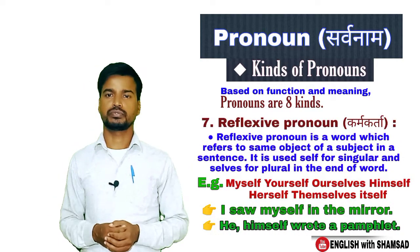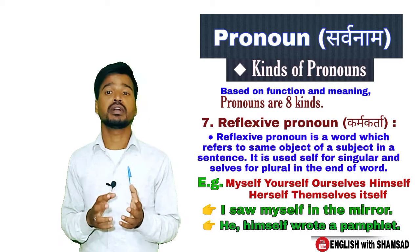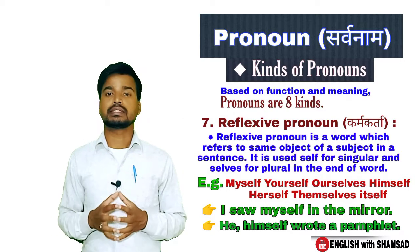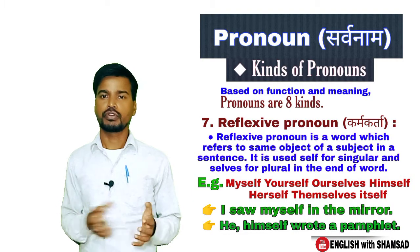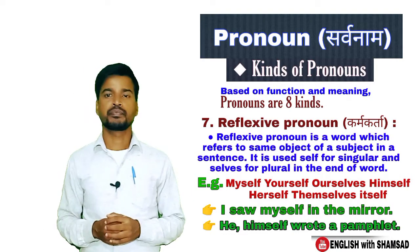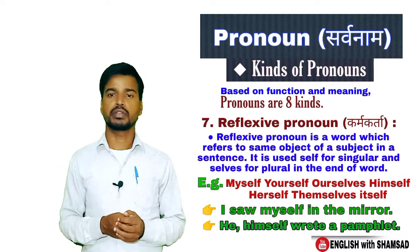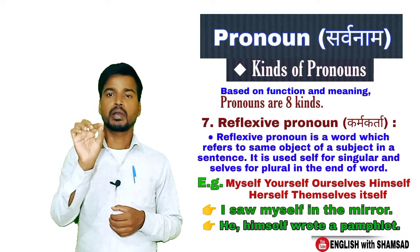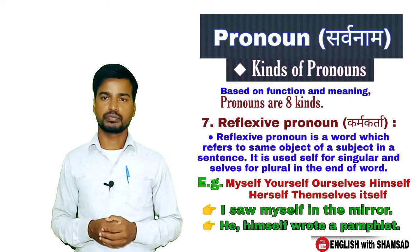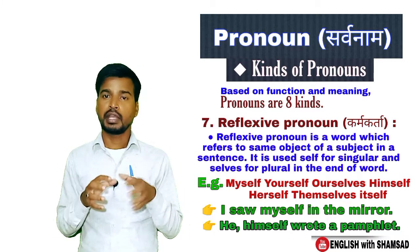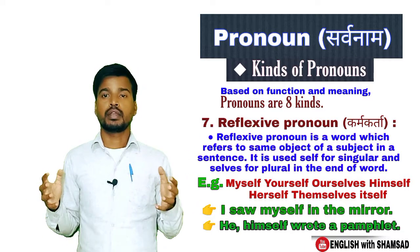The next kind of pronoun is reflexive pronoun. Reflexive pronoun is a word which refers to the same object as the subject in a sentence. The word 'self' or 'selves' is used in plural form. For examples: myself, yourself, themselves, ourselves. In a sentence: 'I saw myself in the mirror' — 'myself' is a reflexive pronoun. 'He himself wrote it' — 'himself' is a reflexive pronoun.